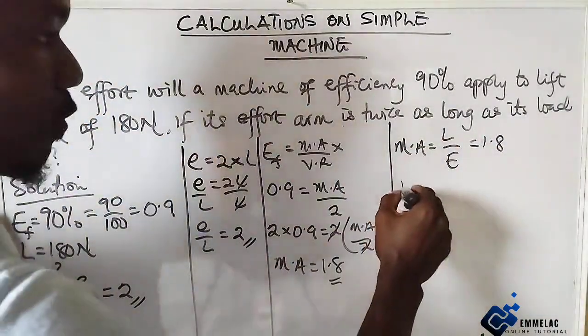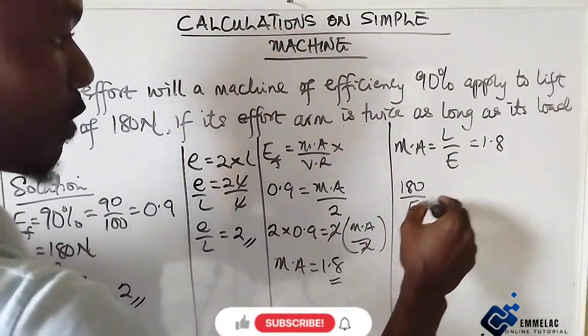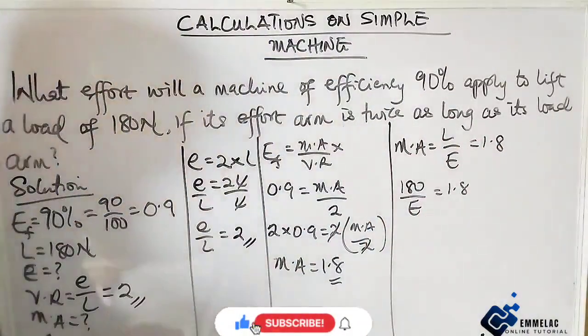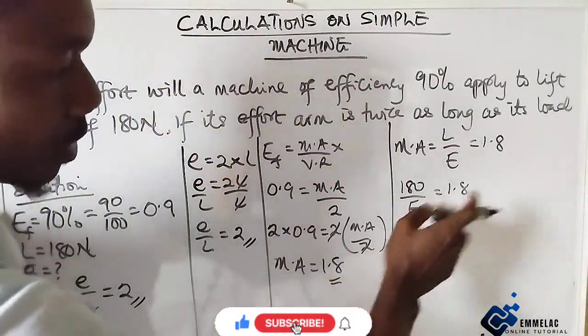So here we have 180 over the effort equals 1.8. Now multiplying—okay, let us just cross multiply.